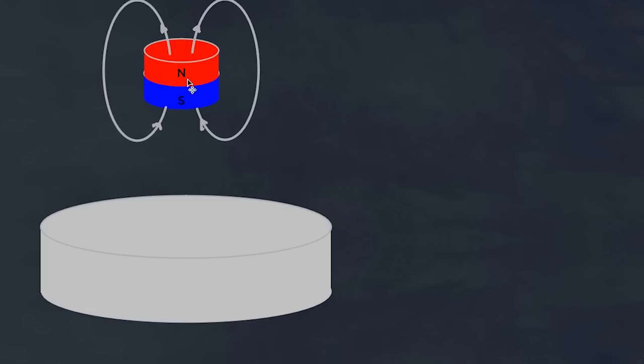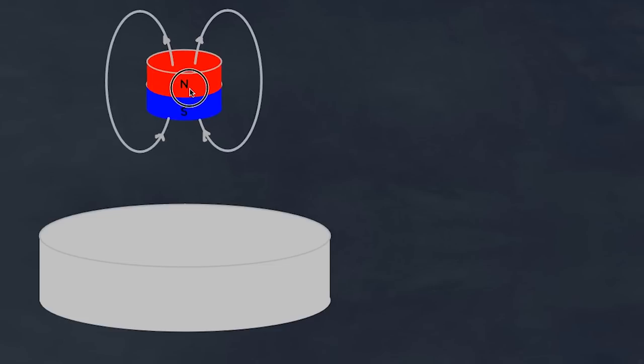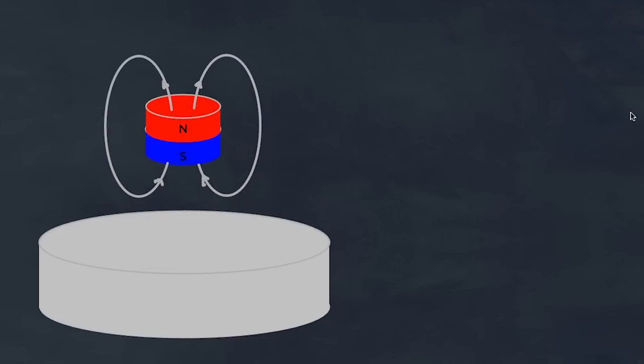So here I have my little rare earth magnet over here and my superconducting disc over here. Now the Meissner effect actually is a state that happens when you place a magnet on the disc and you cause this to become a superconductor. And what happens is that normally, in the case of the disc not being superconducting, these magnetic field lines will pass through this disc.